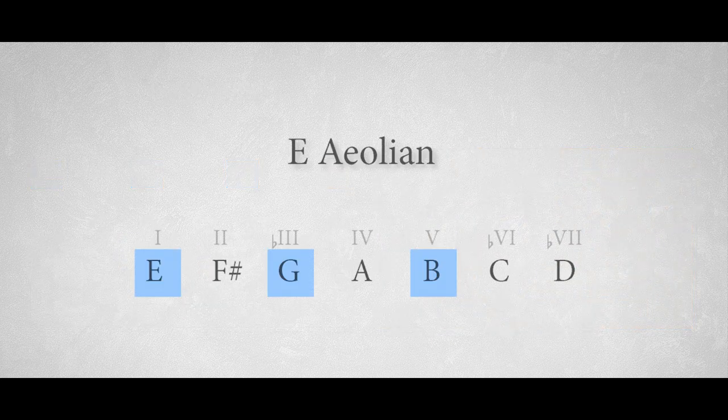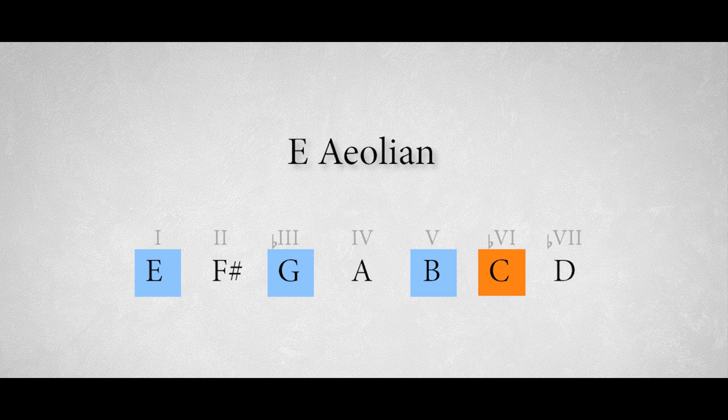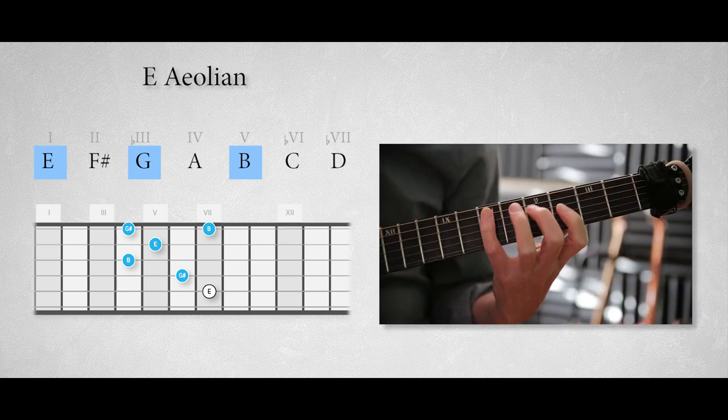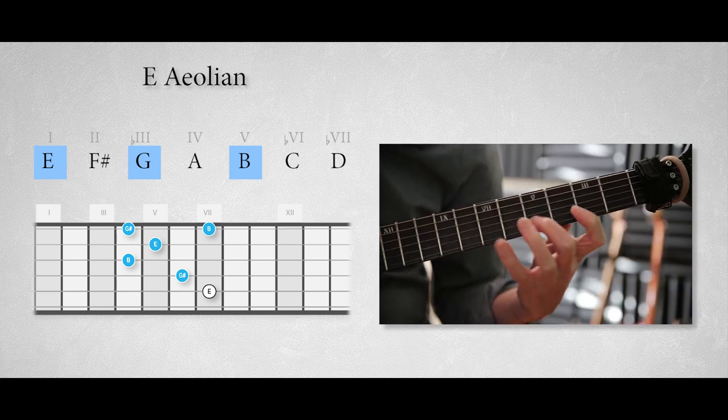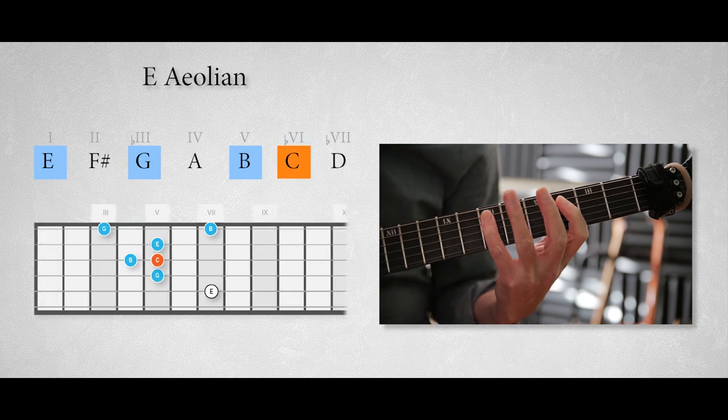The E minor triad arpeggio can be enriched with the sixth degree from the Aeolian scale to outline that intense Aeolian minor sound. This is the E minor arpeggio. And this is the same arpeggio with an addition of the characteristic flattened sixth degree, the note C, in the Aeolian mode.